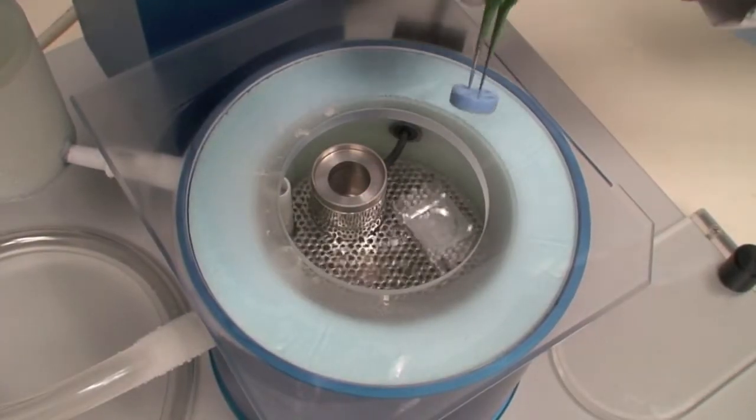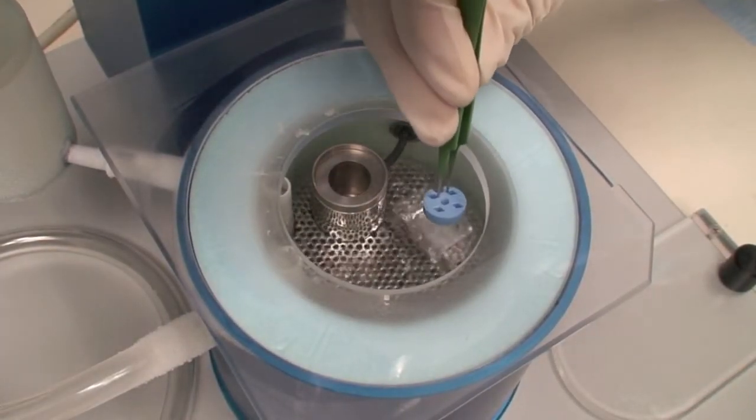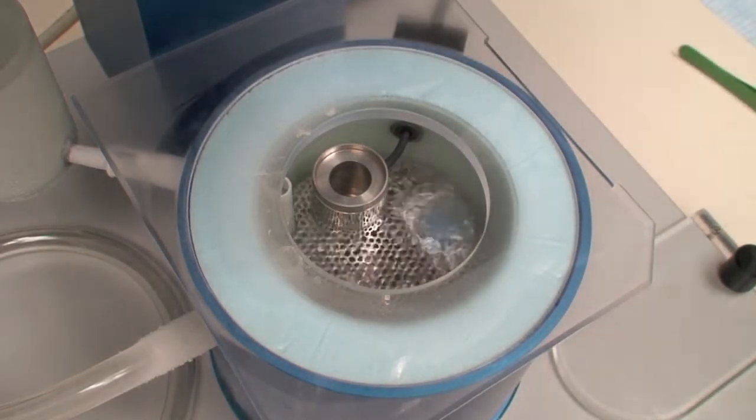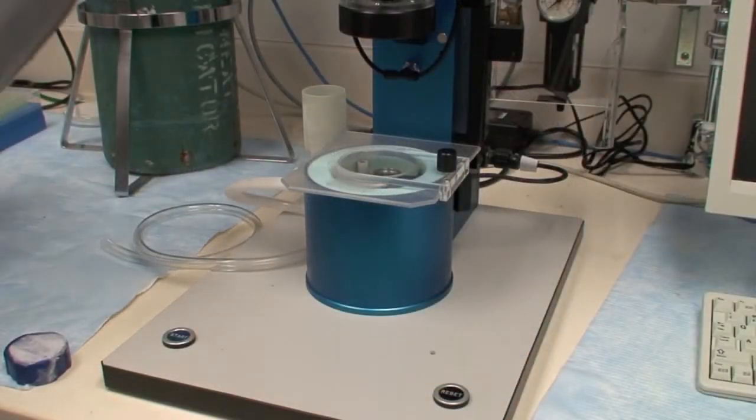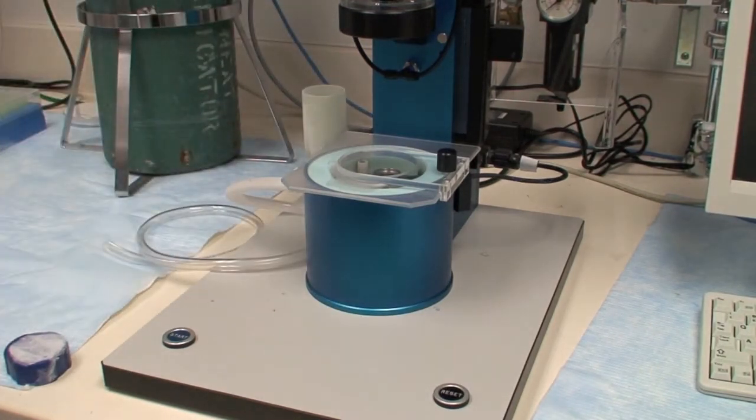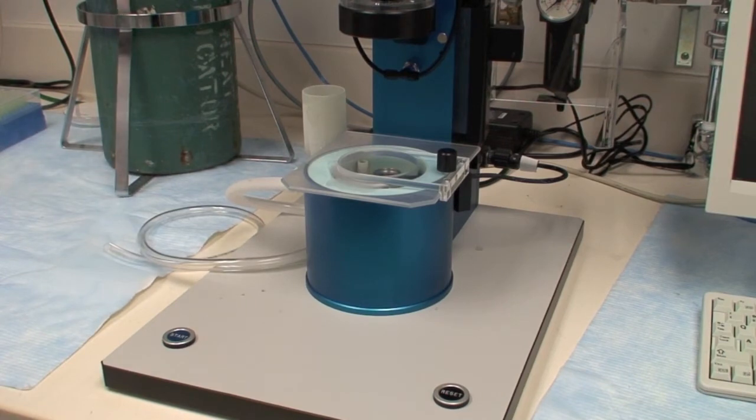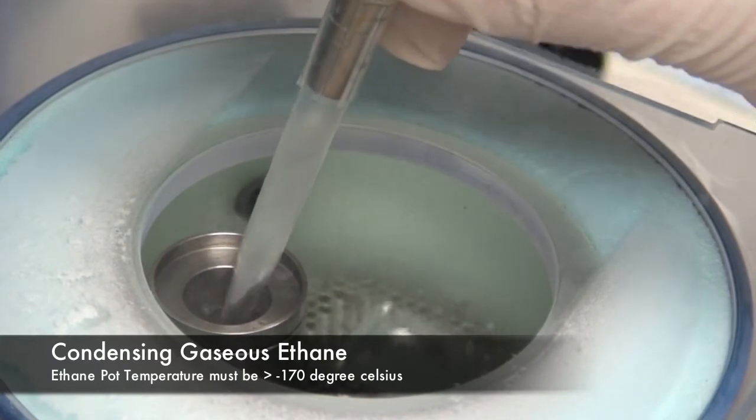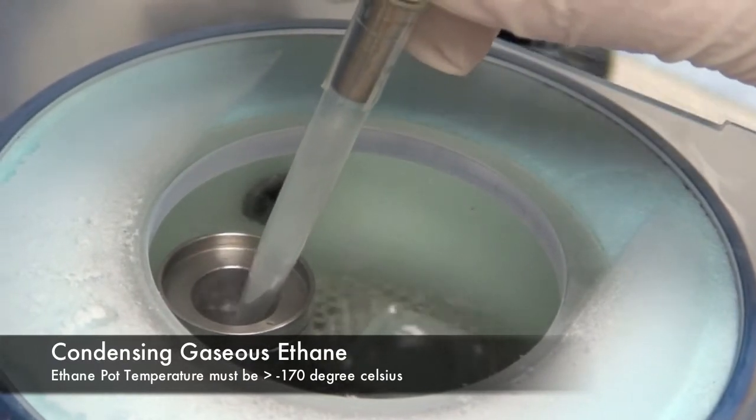Insert the pre-cooled blue grid box into the cryo grid box transfer pot. Maintain liquid nitrogen level in cryo workstation above the surface of the grid box by refilling the remote fill tunnel. When ready, carefully condense gaseous ethane into the ethane pot.